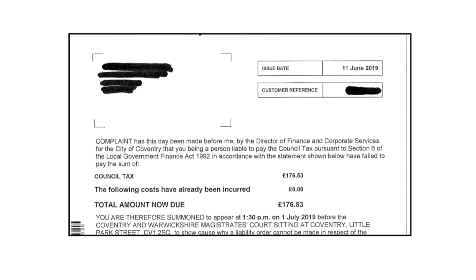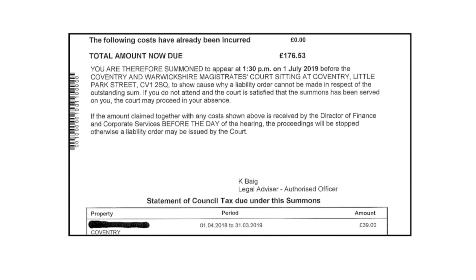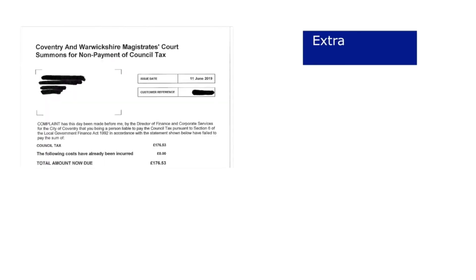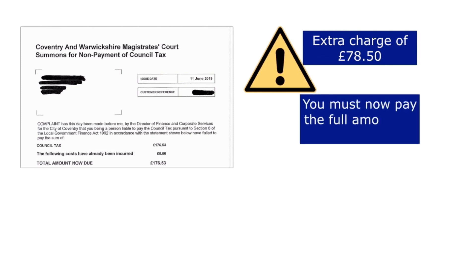This court summons will be issued to each person liable for the council tax. Moreover, the council will add a charge of £78.50 to your account if it has to issue the summons. At this stage, to prevent further proceedings, you must pay the full year's council tax as well as the cost of receiving the summons before the hearing. If this occurs, no further action will be taken, however you may still have to attend the hearing as a formality.